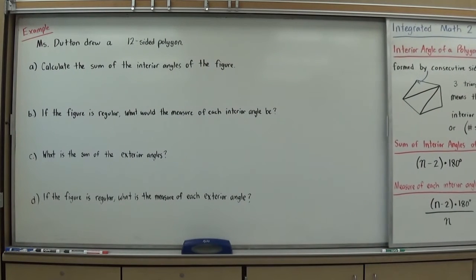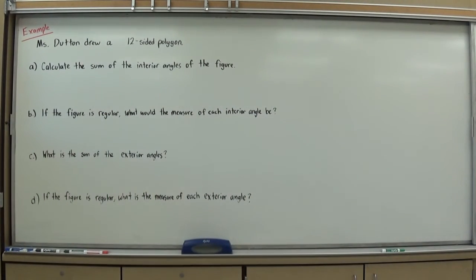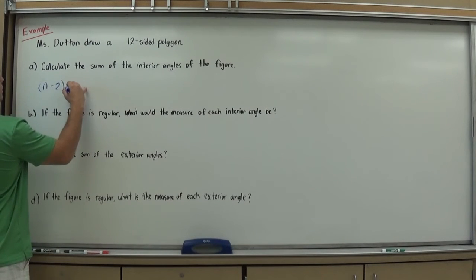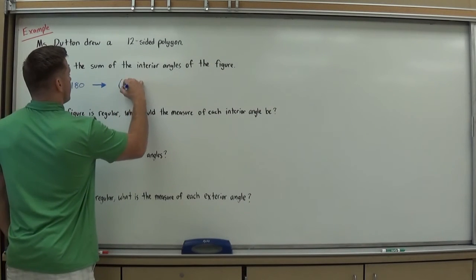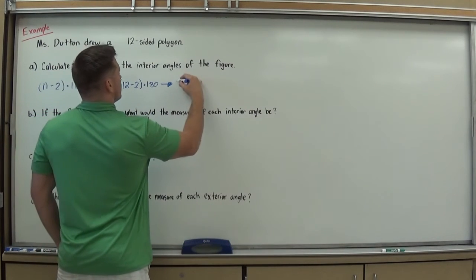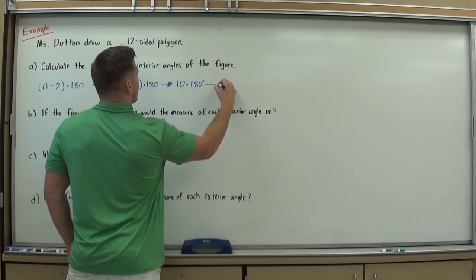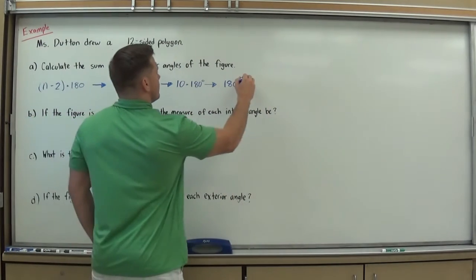Let's try an example. Mrs. Dutton drew a 12-sided polygon and wants us to find all this info. It says: calculate the sum of the interior angles of the figure. For interior angles, I use the sum formula (n − 2) × 180, and I plug in the number of sides. It's a 12-sided shape, so: (12 − 2) × 180, which equals 10 × 180 degrees, which means the shape has 1800 degrees total. That's the sum of the interior angles.